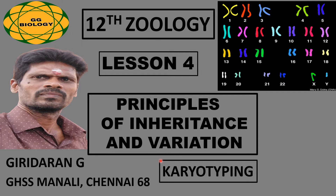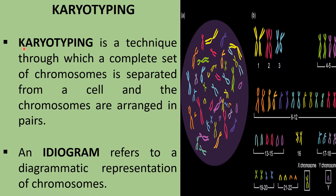The topic of this video is karyotyping, a lesson from principles of inheritance and variation. Karyotyping is a technique through which a complete set of chromosomes is separated from a cell and the chromosomes are arranged in pairs. In a human diploid cell there are about 23 pairs, or 46 chromosomes.